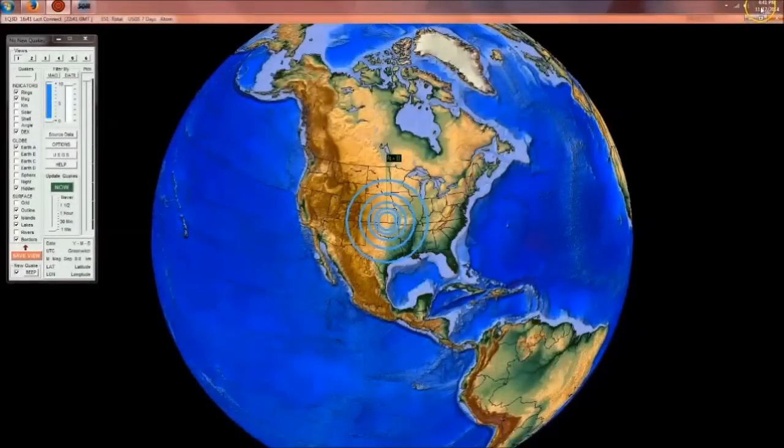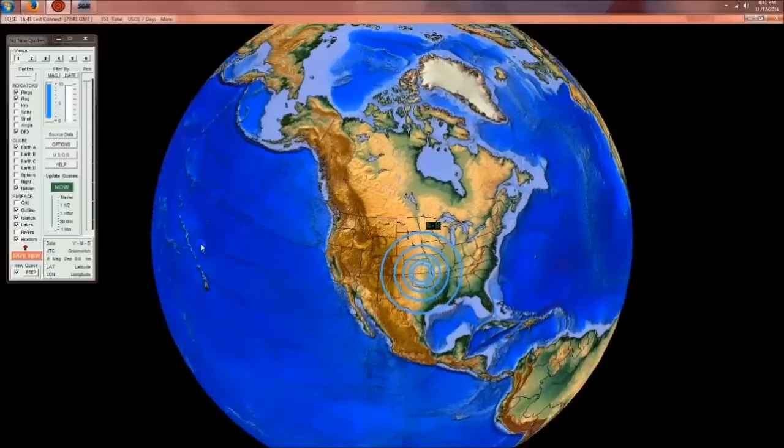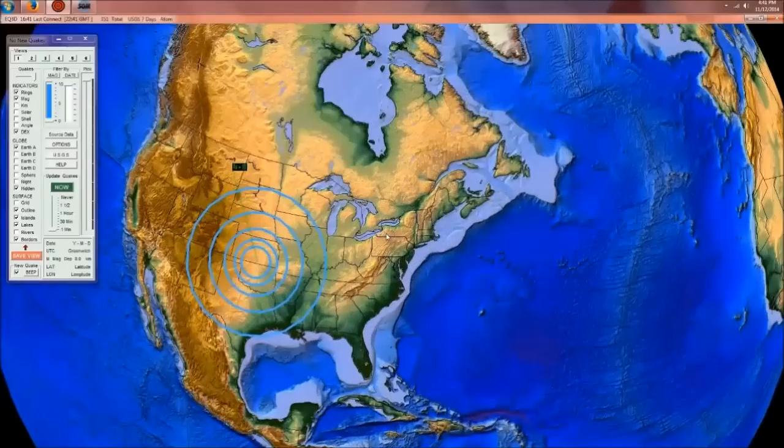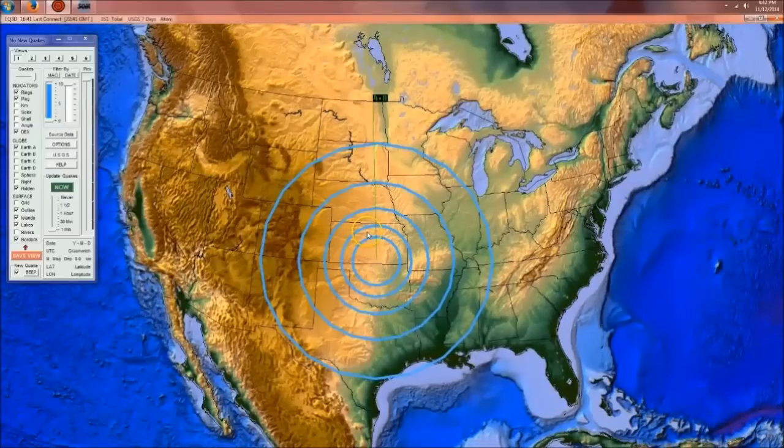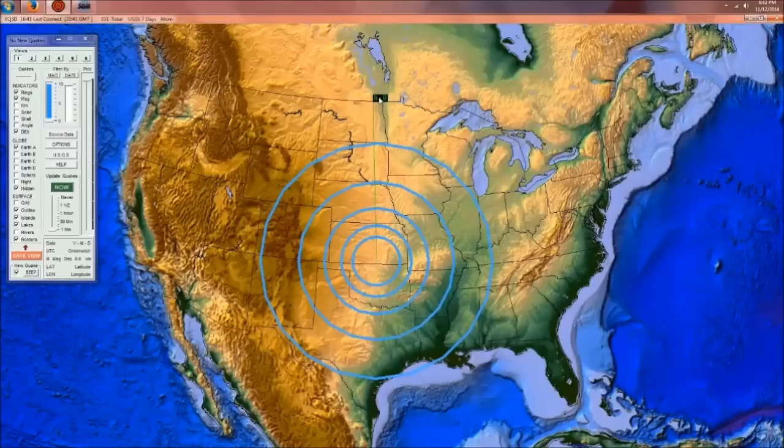Dutch Cents here, 4:41 p.m. Central Time on Wednesday, November 12, 2014, and I've got you looking at Earthquake 3D here, which is a USGS feed of the most recent earthquakes. You can see a 4.8 magnitude earthquake struck here in south-central Kansas, and this is the largest earthquake to strike the region in 140-plus years.